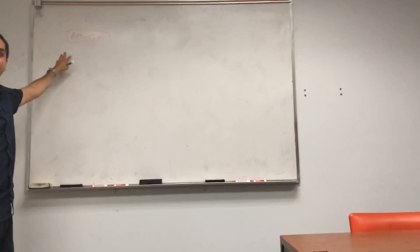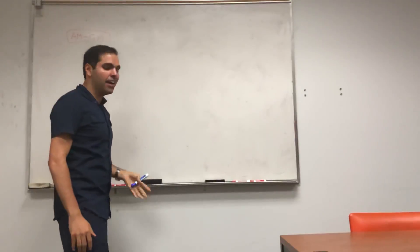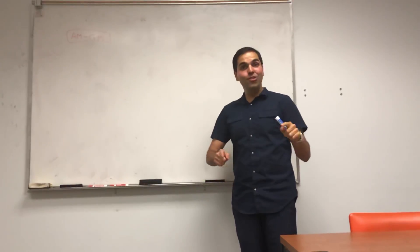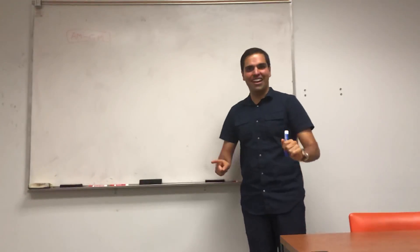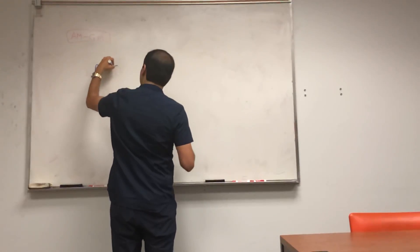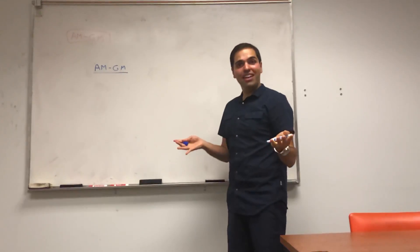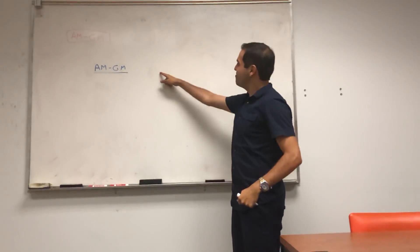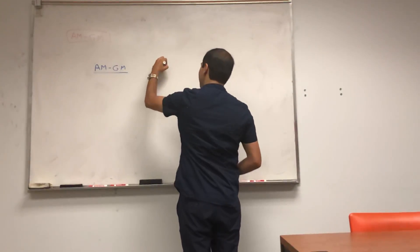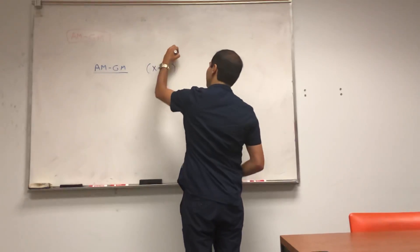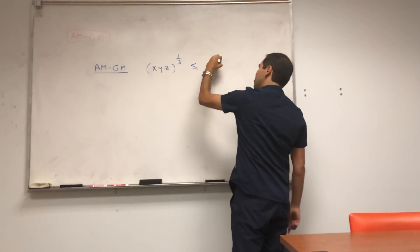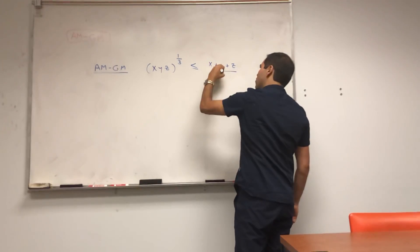In particular, today let me present you a very slick way of proving the arithmetic geometric mean inequality using Lagrange multipliers. So, what does AMGM say? And I'll do it in three dimensions because multivariable calculus, but you could easily extend it to any number of dimensions. So in three dimensions it says that the cube root of XYZ is always less or equal to X plus Y plus Z over 3.